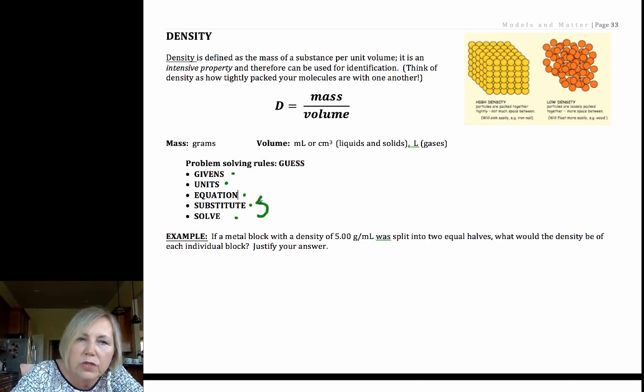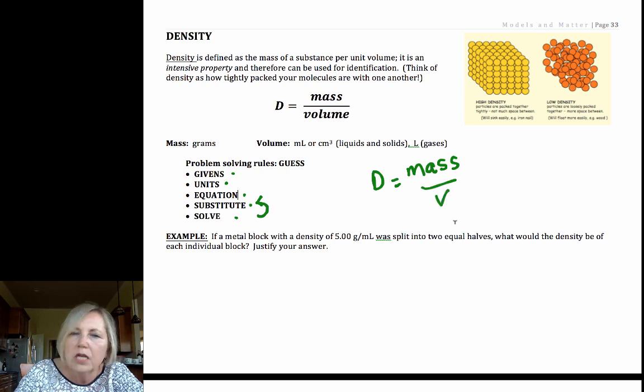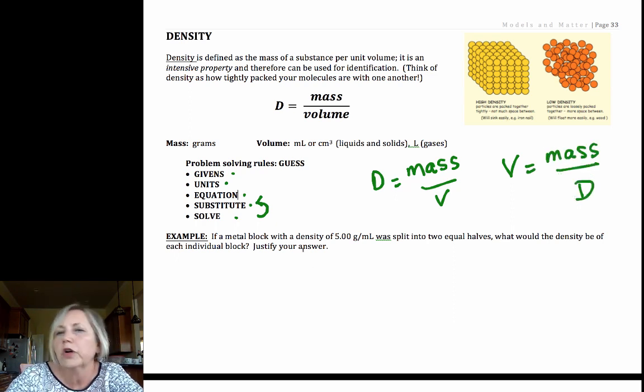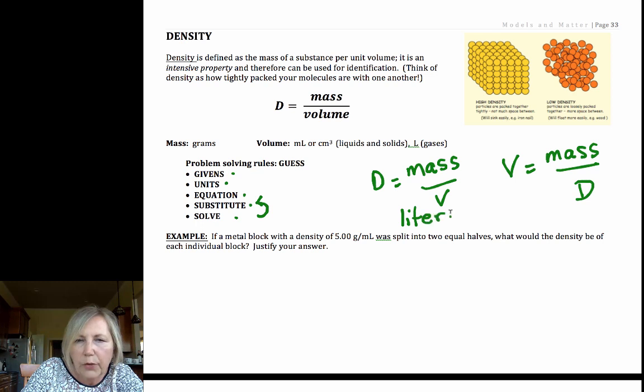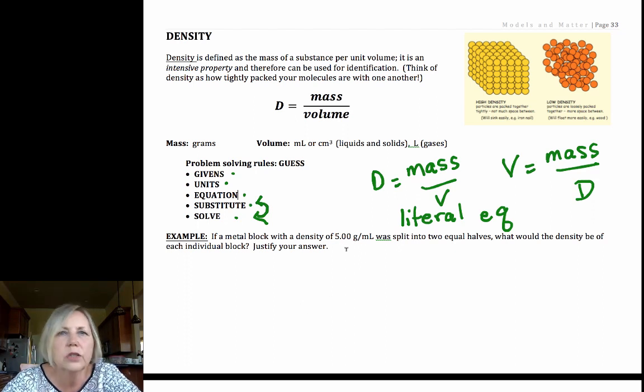You may want to solve before you substitute. For example, we have density is mass per volume. What if your volume was your unknown? You may want to cross multiply, say volume is mass over density. It tends to be a little bit less writing than if you're having to do all that algebra with the numbers. This is called solving a literal equation.